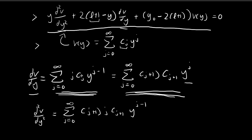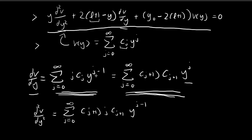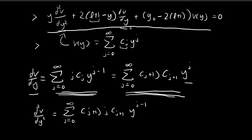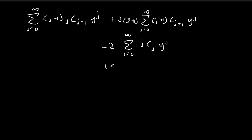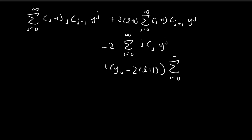Both forms of the first derivative are the exact same series, just expressed differently. For the final term involving (y_0 minus 2(l+1))·v(y), we directly substitute the series for v(y), giving plus (y_0 minus 2(l+1)) times the sum of c_j·y^j. All of these terms together are equal to zero.